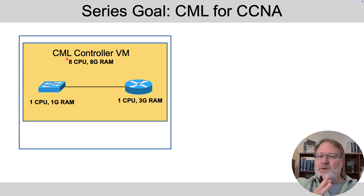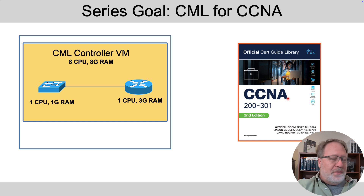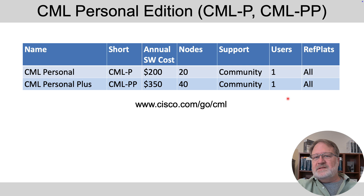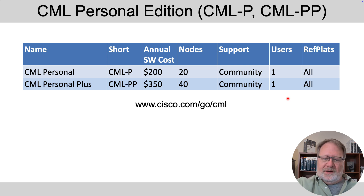Keep that context in mind. Everything I'm talking about is in the context of CCNA. Somewhere around 2016, Cisco announced this product — it wasn't called CML then, it was called VIRL, V-I-R-L. Then VIRL grew up to be called what we today call CML Personal Edition. It's software that you can install and use personally. The shorthand for CML Personal is CMLP, and there's an annual fee of about 200 bucks.